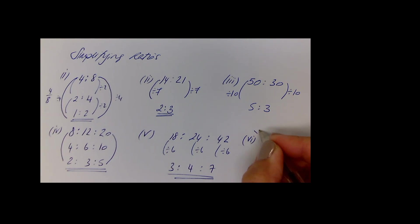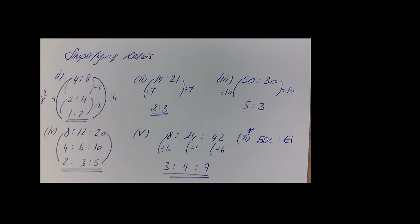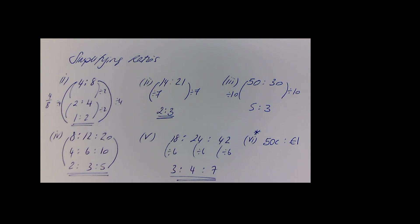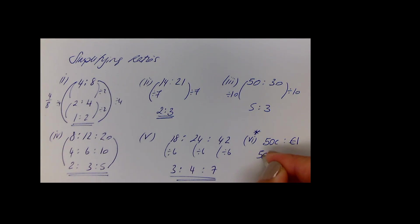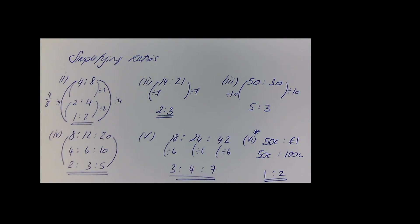One important thing to be careful of: if you have 50 cent to 1 euro, when asked to simplify, if your units aren't the same your proportions won't be correct. You must either convert everything to euros or everything to cent first. Converting to cent gives 50:100, then dividing both sides by 50 gives the correct simplified ratio of 1:2.